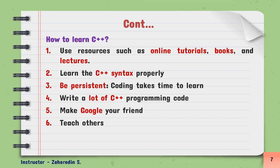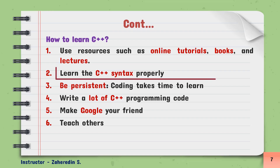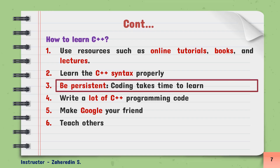Now let us discuss about how to learn C++ programming. Previously, you know about the historical background, what C++ programming language is, and why we learn C++. Now finally, you have to know how to learn C++. The first tip is to use resources such as online tutorials, books, and lectures. There are several online tutorials available nowadays, so by accessing them you can simply learn C++. The second tip is to learn the C++ syntax properly. Every programming language has its own syntax, so you have to learn this programming language's syntax properly. The third tip is to be persistent. Coding takes time to learn, so you have to be persistent.